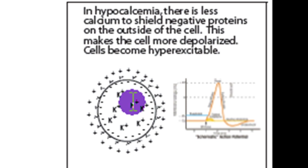Those negative charges need to be balanced by calcium. Calcium is the only ion small enough to get in there, but it carries a huge water shell. So calcium is the only ion on the outside of the cell small enough to balance these negative charges created by proteins on the outside of the cell. If there's not as much calcium, there's less shielding of these negative charges, so the outside of the cell is more negative. This lessens how negative the inside of the cell is in comparison, giving the membrane what looks like a more positive voltage — meaning it's closer to its threshold and the cell is hyperexcitable.